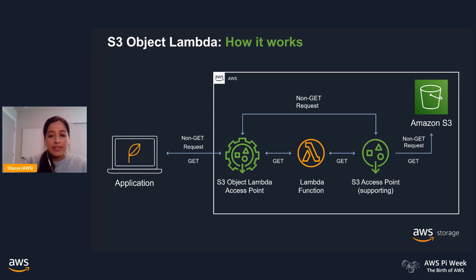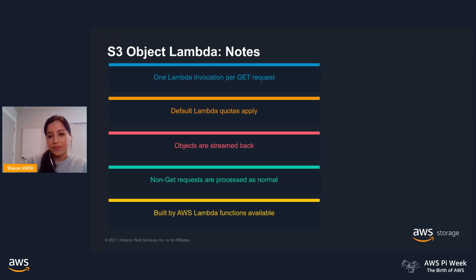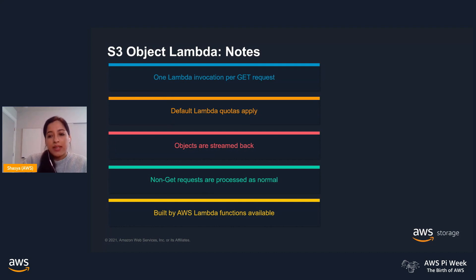Your Lambda function automatically receives relevant context — it knows which object to retrieve, what permissions to use, and how to route objects back to requesting clients and applications. Each S3 GET request will invoke a single Lambda function. Default Lambda quotas apply, and this feature is supported by all Lambda runtimes. Transformed objects are streamed back to requesting clients — no additional copies are created or stored in S3. Lambda runtimes are limited to 60 seconds. In case your Lambda fails, you will receive a request response detailing the failure. Lambda invocations only occur with GET requests; all other S3 requests are processed normally.